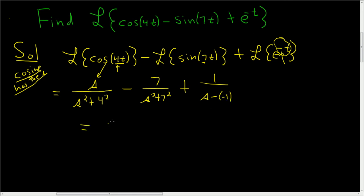Okay, let's finish. This is s over s squared plus 16 minus 7 over s squared plus 49 plus 1 over s plus 1.